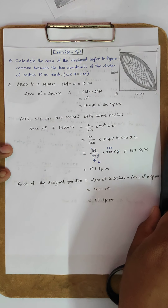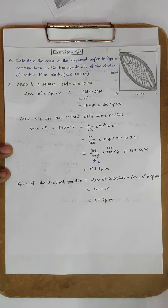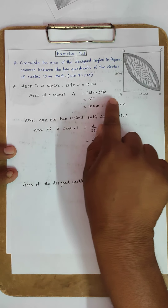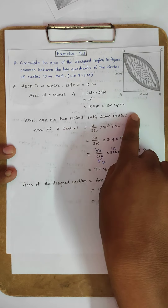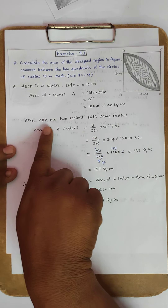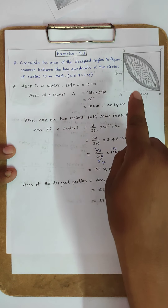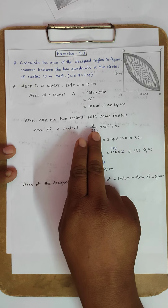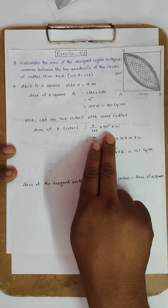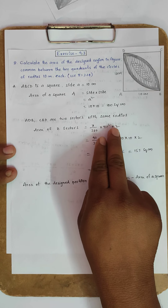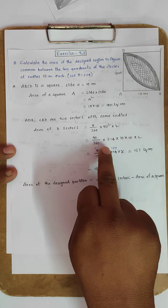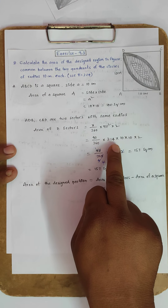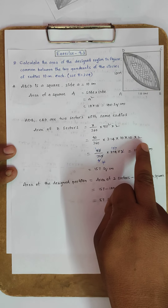In the problem, ABCD is a square with side 10 cm. Area of square = side × side = 10 × 10 = 100 square centimeters. ADB and ACB are two sectors overlapping each other. Find the area of two sectors: (90/360) × π × r² × 2, using π = 3.14 and r = 10 cm.